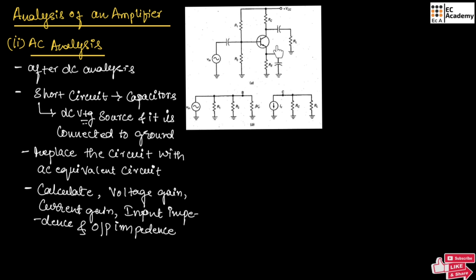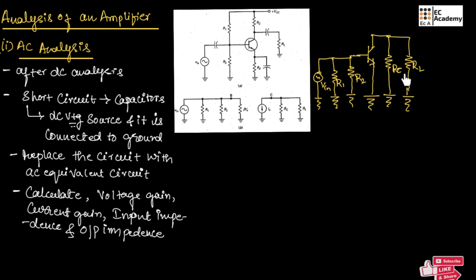For this amplifier circuit, we have written an AC equivalent circuit for AC analysis. AC analysis is done after DC analysis. Here, we need to short-circuit all the capacitors and the DC voltage source and connect that to ground. Then we replace this circuit with an AC equivalent circuit. As you can observe from this diagram, we have short-circuited the capacitor as well as the DC voltage source, which is connected to ground. If we short-circuit the capacitor across the emitter resistance, this emitter resistance will be eliminated — that is why that resistance is not written. So, this circuit is replaced by an AC equivalent circuit.